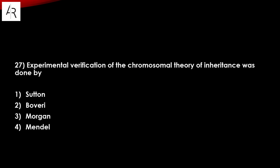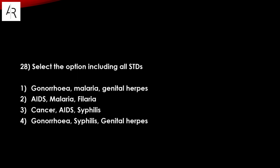Question number twenty-seven: experimental verification of the chromosomal theory of inheritance was done by T.H. Morgan, using Drosophila.